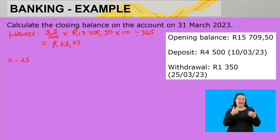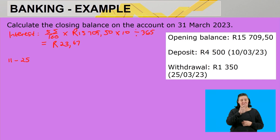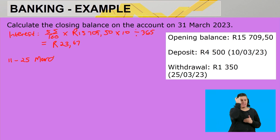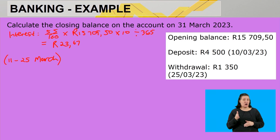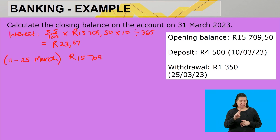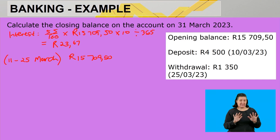From the 11th all the way up to the 25th, the balance in the account is R15,709.50. But now on the 10th of March, a deposit takes place. So the balance from that point is R15,709.50, but what happens now on the 10th?